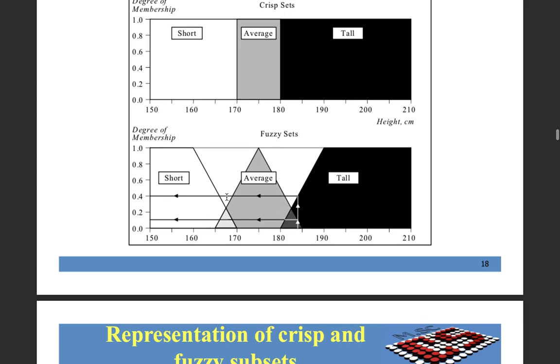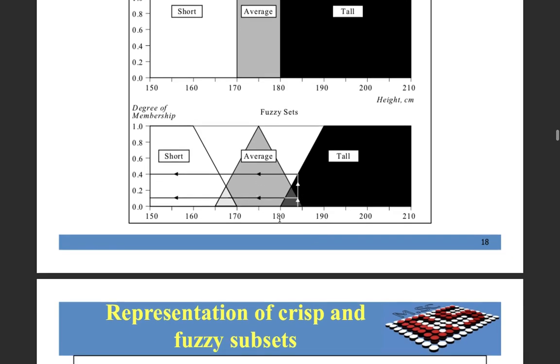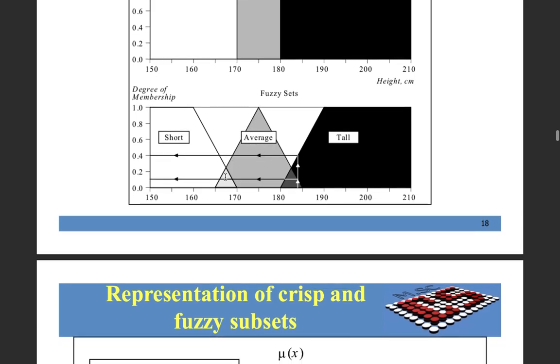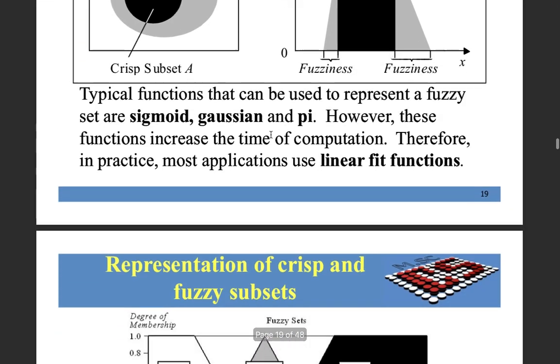Each has a degree of membership between 0 to 1. So a person whose height is 170 plus 180 by 2, that is 175, his membership value is 1 and is surely average. But as we go below his average height, we will say he's approaching to average.